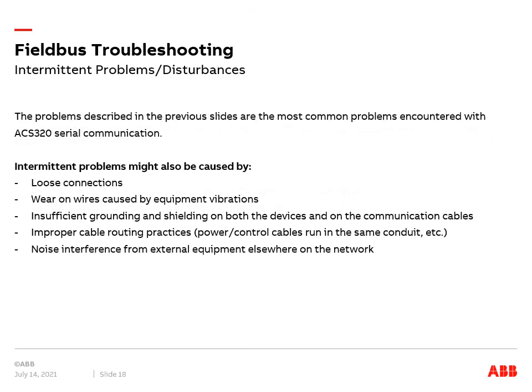Let's take a moment to talk about intermittent problems and disturbances. The problems described in the previous slides are the most common problems encountered with ACS-320 serial communication. Intermittent problems might also be caused by loose connections, wear on wires caused by equipment vibration, insufficient grounding and shielding on both the devices and on the communication cables, improper cable routing practices — for instance, power or control cables run in the same conduit — and lastly, noise interference from external equipment elsewhere on the network.